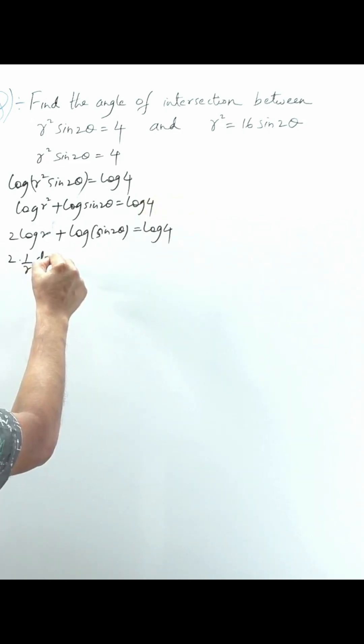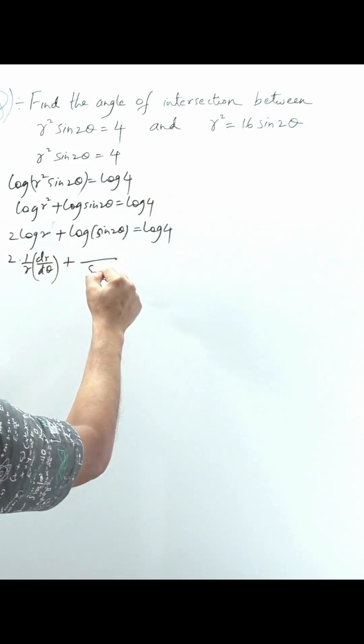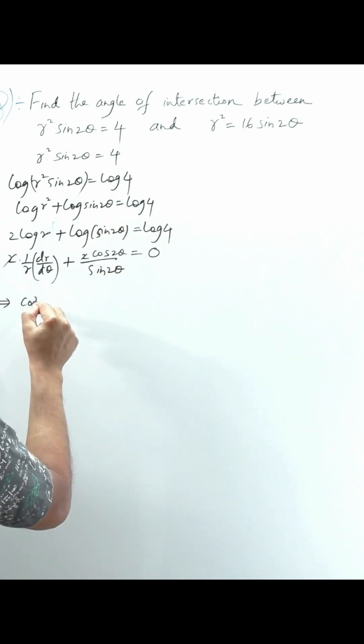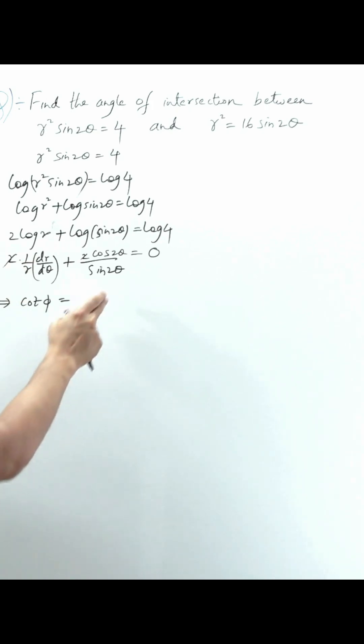After differentiation: (1/r)(dr/dθ) plus (1/sin 2θ) times the derivative. The cotangent of φ equals cos/sin, which is cot.